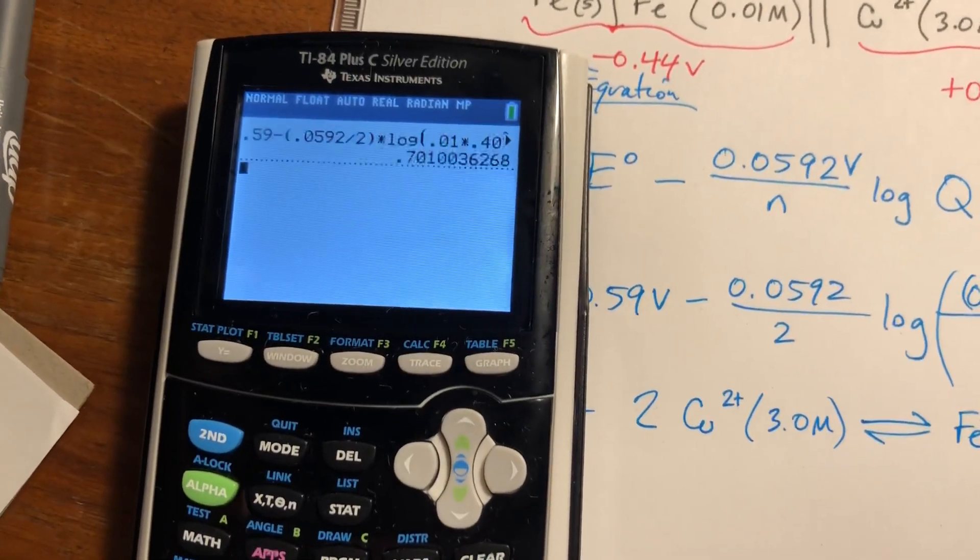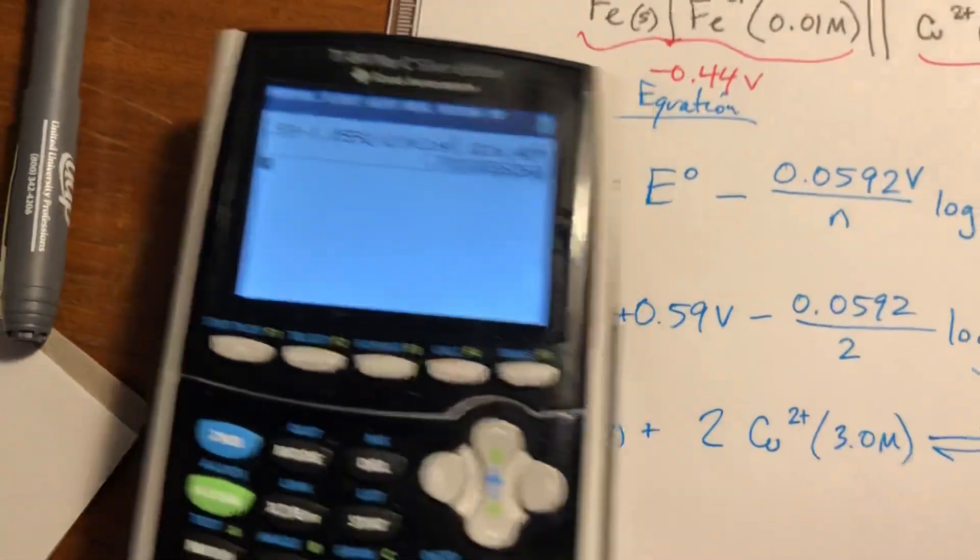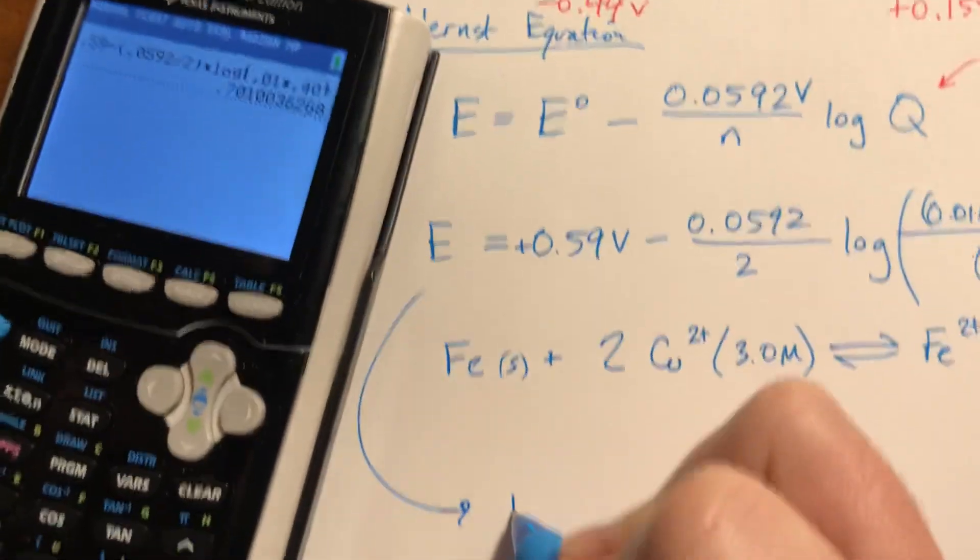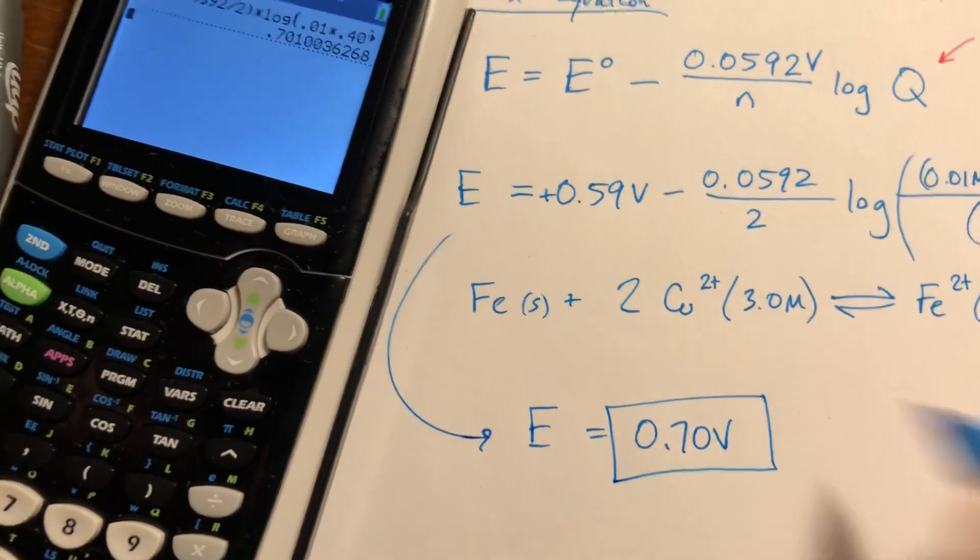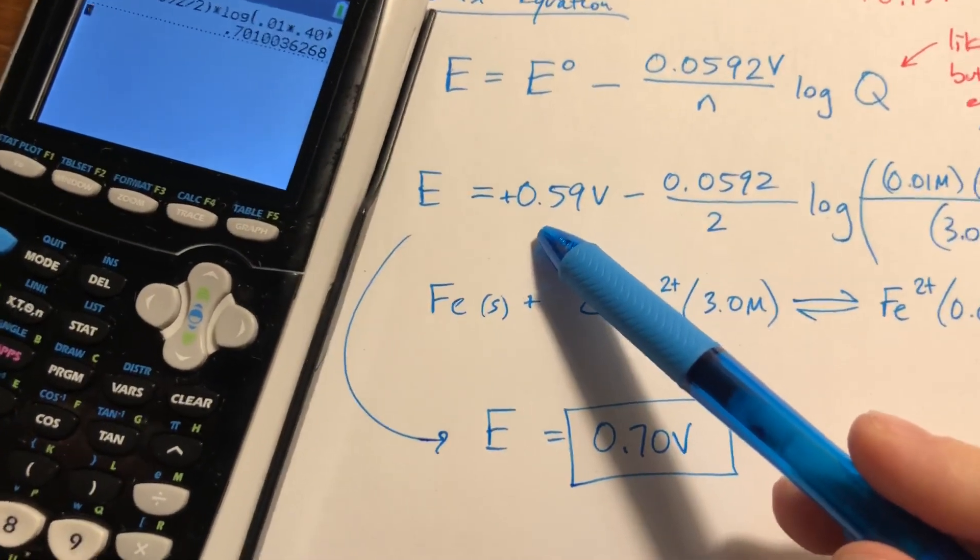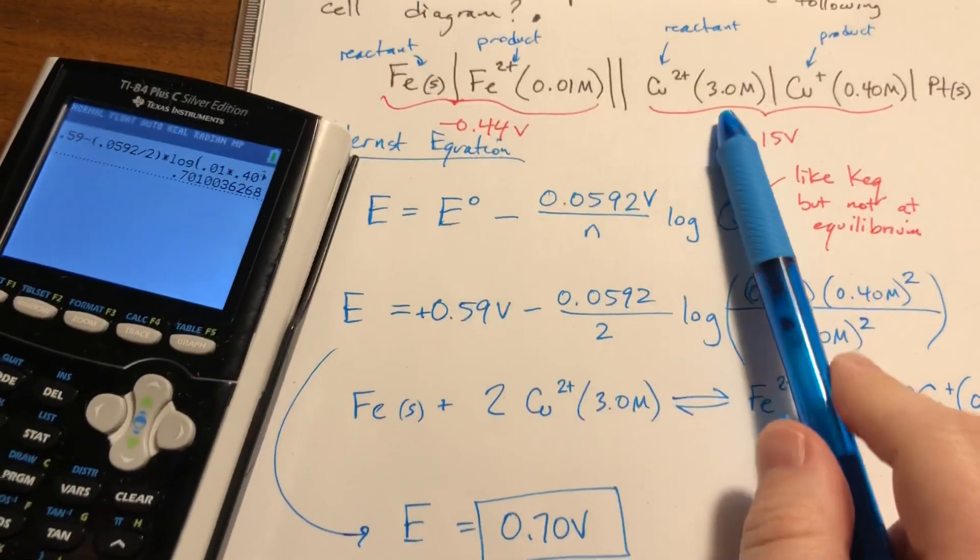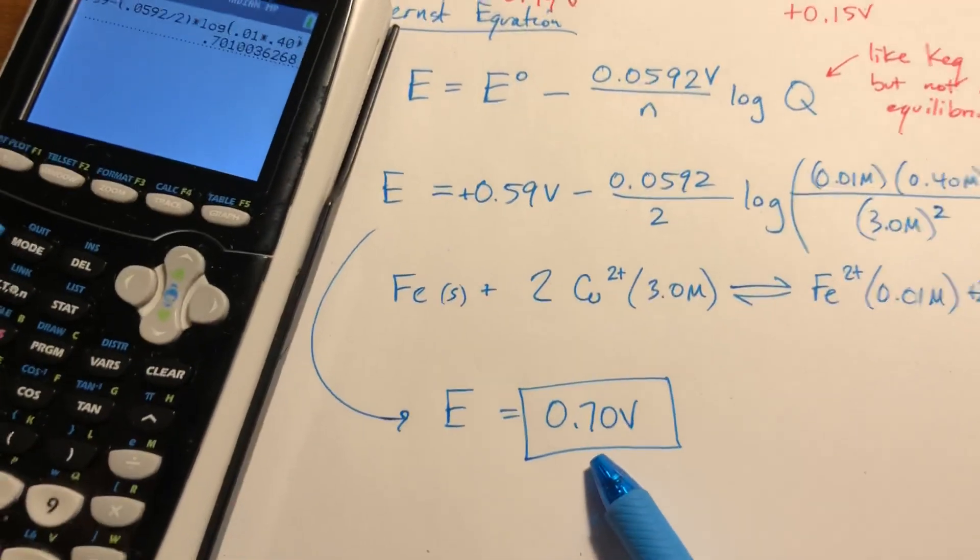Okay, I got an answer of 0.70 because we only get two sig figs here. So E comes out to be 0.70 volts. So if we were at standard conditions, this would have been 0.59, but because this was a higher concentration and these were lower concentrations than 1.0, we got a voltage of 0.7.